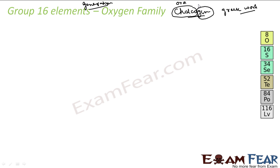They are called ore generators because they exist in a lot of ores. If you talk about Al2O3, oxygen is there. If you talk about zinc sulfide, sulfur is there. If you take FeS2 — in most ores you will find these elements.